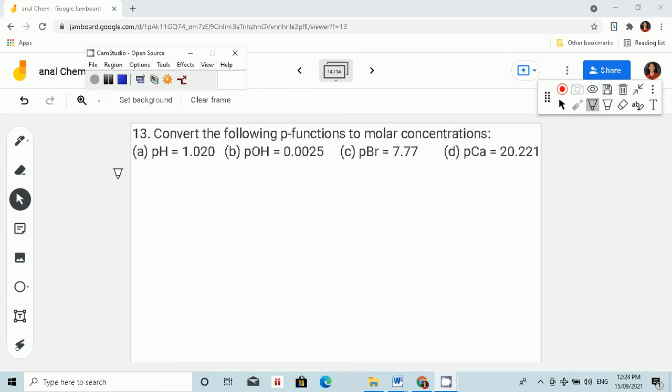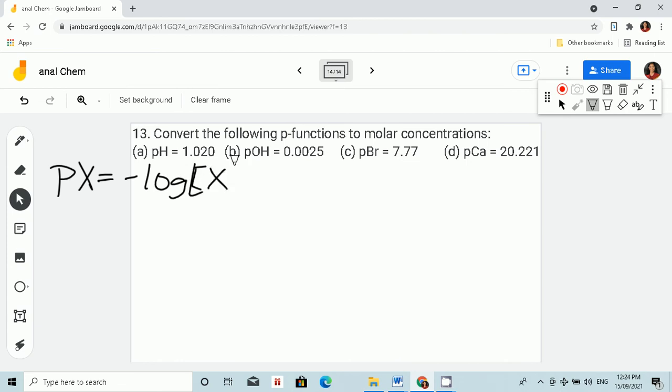We have pH is equal to 1.020. Let's start. We have this formula: pX is equal to negative log times the concentration of X.